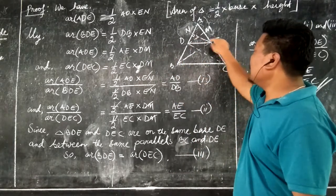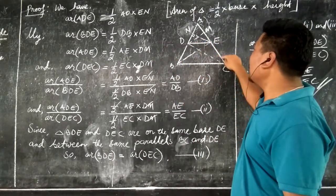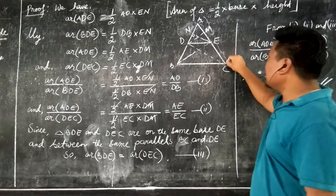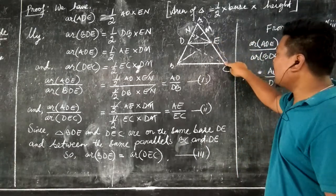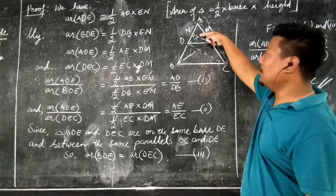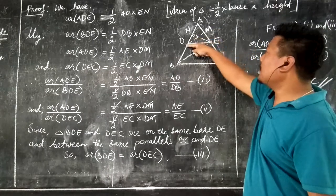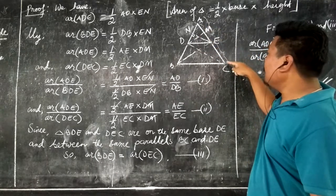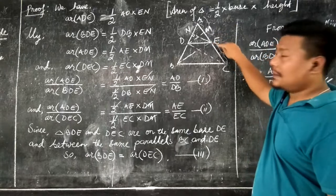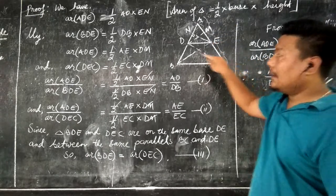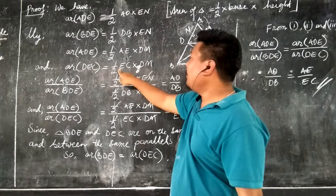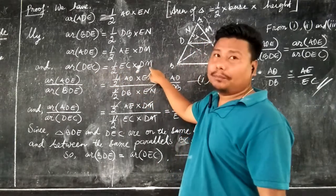Now for area of triangle DEC, we are taking EC as the base and DM as the height. So area of triangle DEC is equal to half into EC into DM.